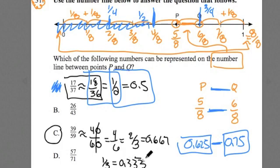1 third is 0.333 repeating, so 2 thirds would be double that, so it would get you something like this. And this value here is in fact in between these two, and C is the answer.